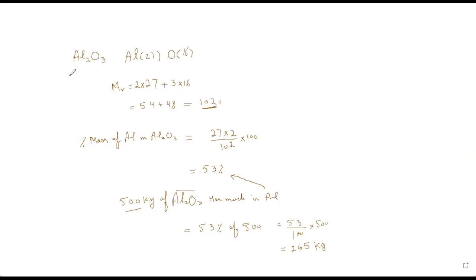To understand this concept practically, we used the example of 500 kilograms of aluminium oxide. Since aluminium is 53 percent of aluminium oxide, 53 percent of 500 kilograms equals 265 kilograms. So 265 kilograms is the aluminium content in 500 kilograms of aluminium oxide. Understand? Yes.